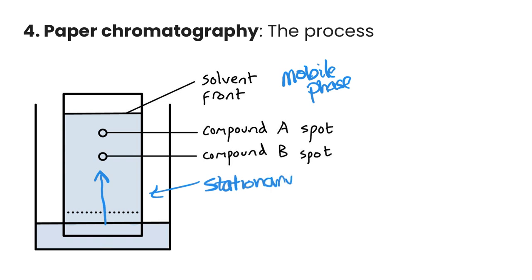The affinity for either the mobile phase, the solvent, or the paper, the stationary phase, is going to depend on the intermolecular forces of attraction between the substances and the solvent or the paper. Depending on if it has more forces of attraction or affinity for the mobile phase, it's going to travel up further. If it has more affinity for the stationary phase, it won't travel as far.